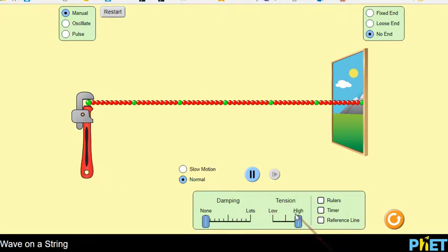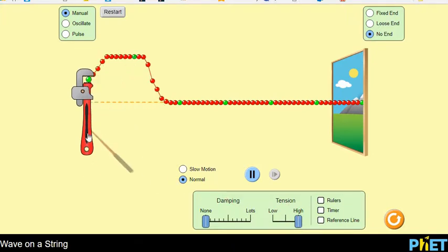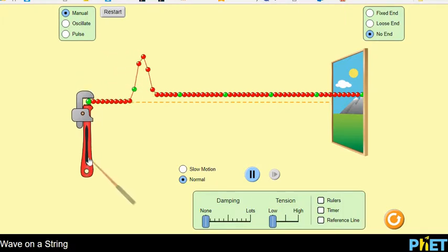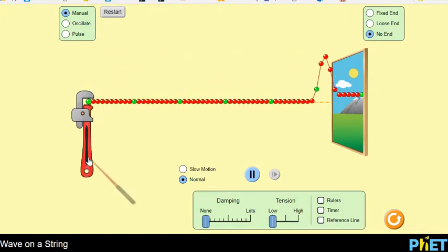We can also change the amount of tension in our string. So with high tension, let's just have a quick look at how it behaves. Okay, our wave traveled out the window. Now what if we go all the way to low tension and compare? Ah, now our wave travels much more slowly along our string.